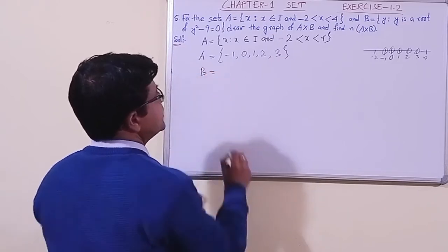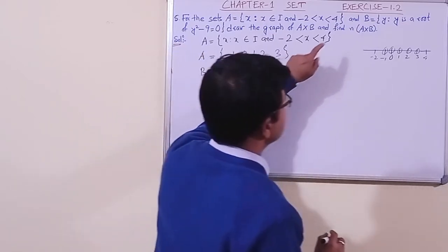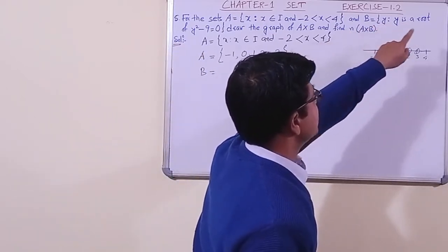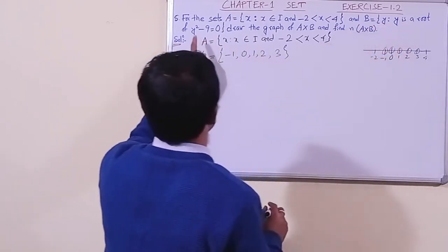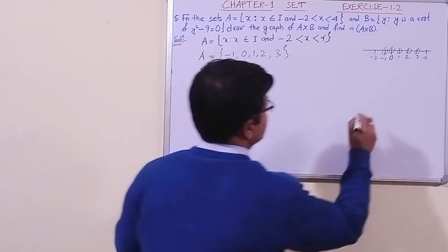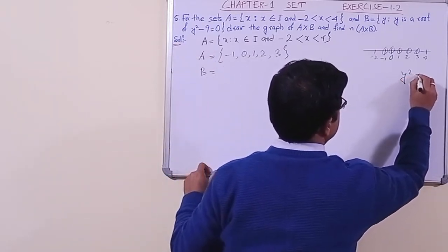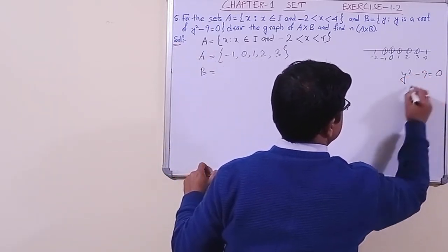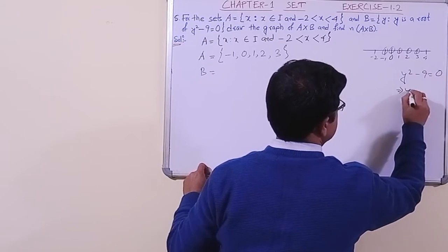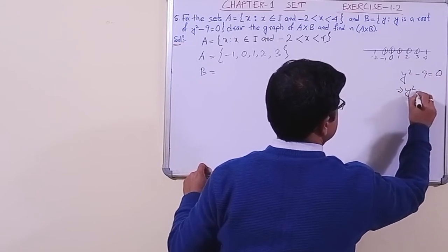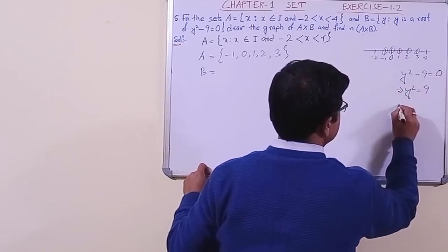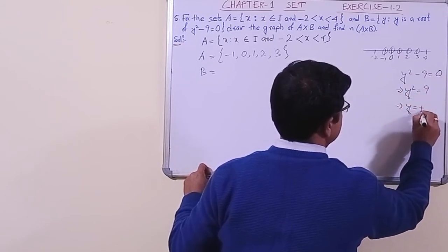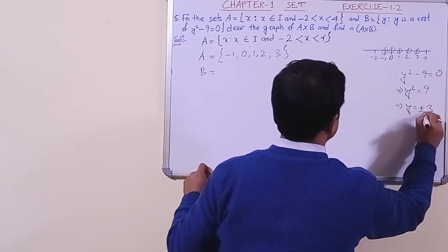Now for set B, solving y squared minus 9 equals 0: y squared equals 9, so y equals plus or minus 3. Therefore set B equals {3, minus 3}.